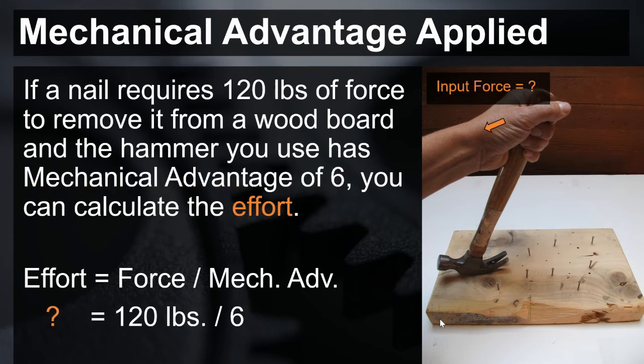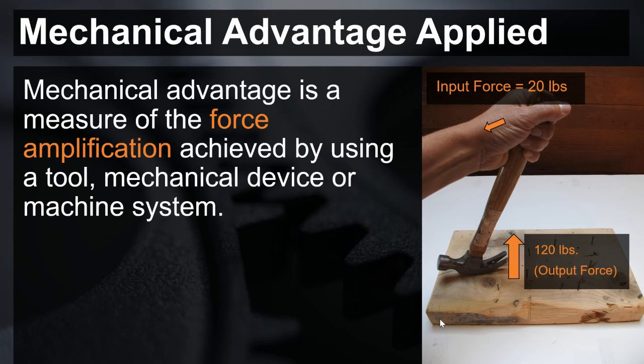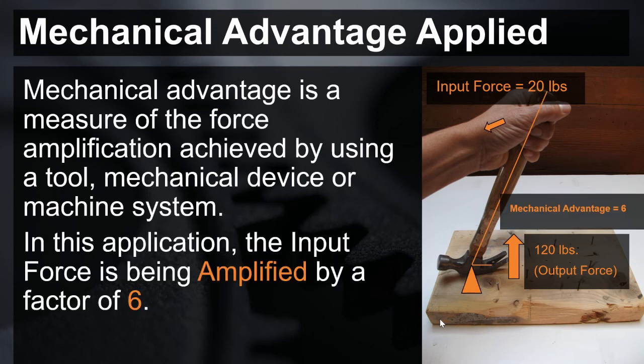To solve this equation, we would divide 120 pounds by the mechanical advantage of six, and our effort or input force would be 20 pounds. Mechanical advantage is a measure of force amplification achieved by using a tool, mechanical device, or machine system. In this application, the input force is being amplified by a factor of six.